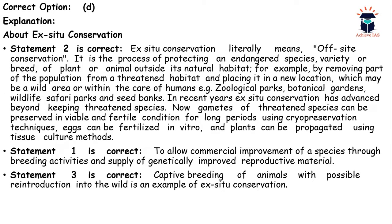Ex-situ conservation, also known as off-site conservation, is a way of protecting an endangered species outside its natural habitat in human-made habitats such as zoological parks, botanical gardens, wildlife safari parks, and seed banks. In recent years, ex-situ conservation has advanced beyond keeping threatened species — gametes of threatened species can be preserved in viable and fertile condition for long periods using cryopreservation techniques, eggs can be fertilized in vitro, and plants can be propagated using tissue culture methods.